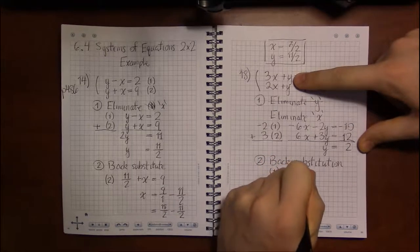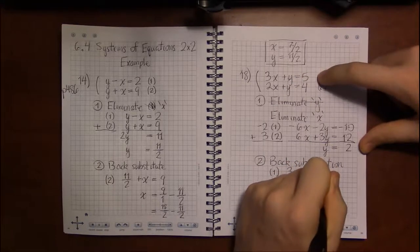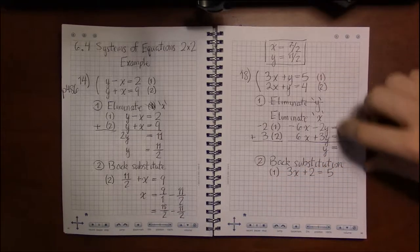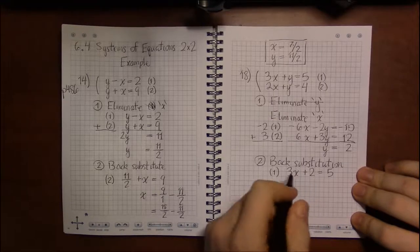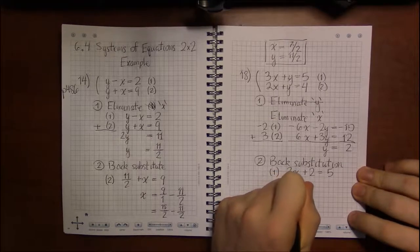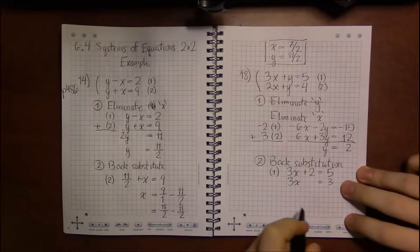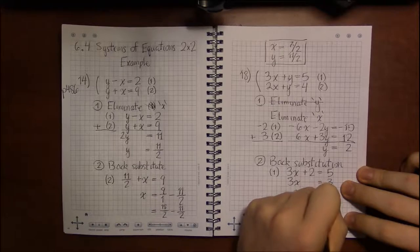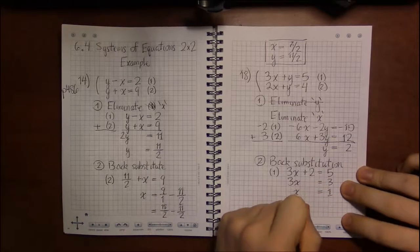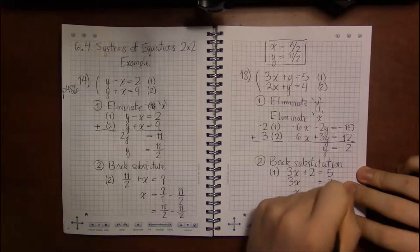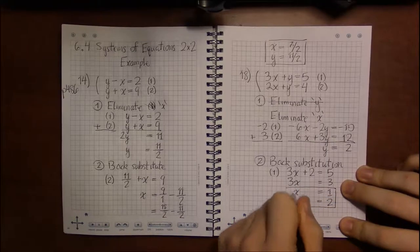So the equation now will read 3x plus 2 equals 5. Now to get x by itself, we'll start by undoing the addition. We'll subtract 2 from both sides and end up with 3x equals 3. Then we can divide by 3 and get x equals 1. So the correct answer is that x equals 1 and y equals 2.